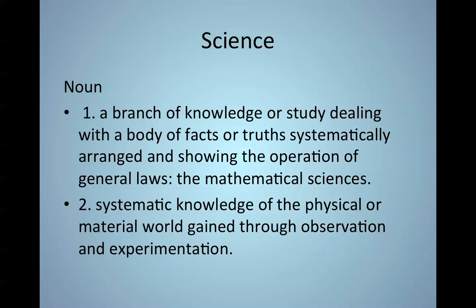Another definition: the systematic knowledge of the physical or material world gained through observation and experimentation. Systematic knowledge, so again, knowledge, information, pulled together in a system, and that knowledge of the physical or material world, the world around us, gained through observation and experimentation. Seems pretty straightforward, but there are some key elements there. There's the idea of using observation and experimentation to derive facts, to derive truths, and then to observe them in action.